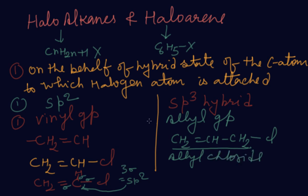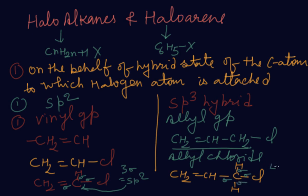Now check the hybrid state of the carbon to which chlorine is attached in allyl chloride: CH₂=CH–CH₂–Cl. Open the carbon bearing chlorine and count: one sigma bond, two sigma bond, three, and four sigma bonds. Four sigma bonds means it is SP3. So to recap: in SP2, the first example is vinyl chloride, and in SP3 we consider allyl group — allyl chloride.